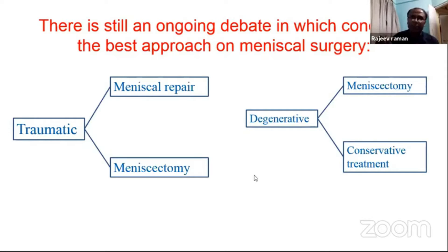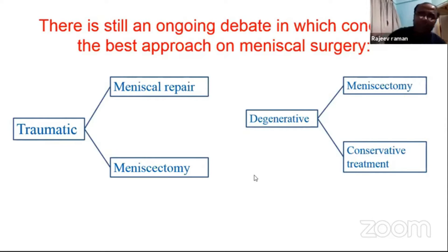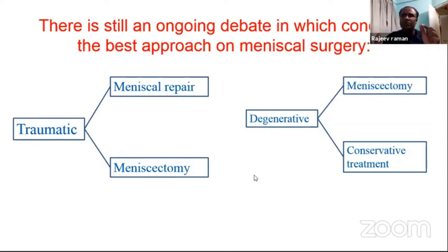Sometimes, if it is irreparable, yes, you have to go for meniscectomy. The other type of tear is the degenerative tear, seen above 40 years of age with arthritic changes — due to circumferential loading or rotational movement there is a complex tear. In degenerative tears, if you try to repair them, you are burning your fingers. Always try to go for balancing or meniscectomy in degenerative tear.